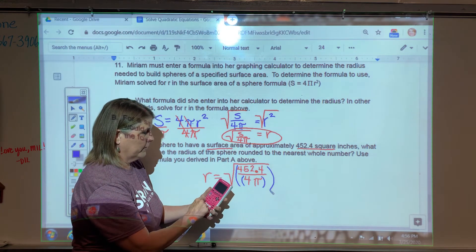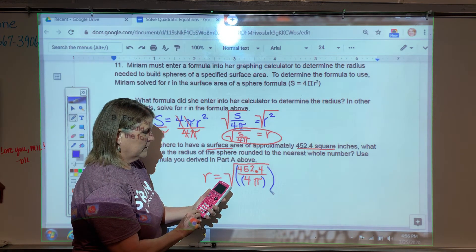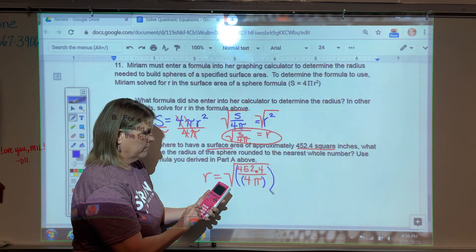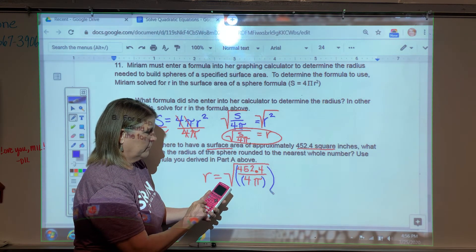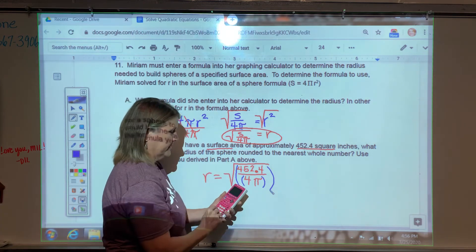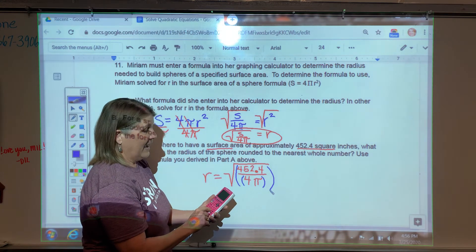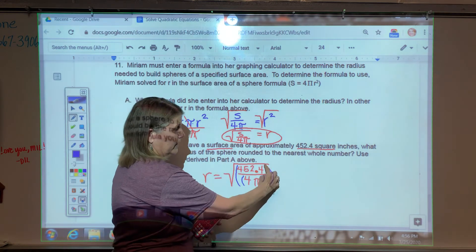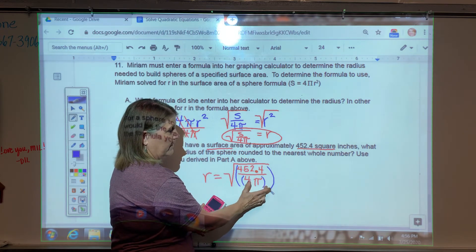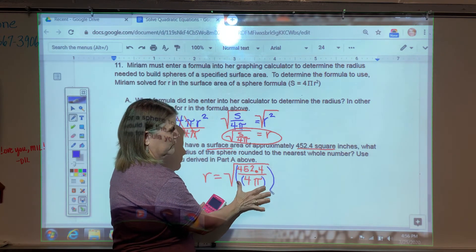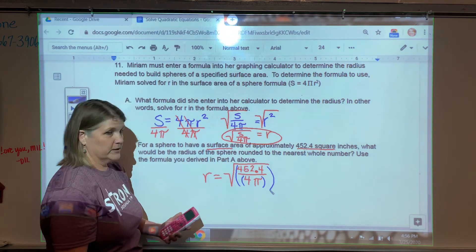I'm going to hit 2nd X squared to pull up that radical symbol. And I'm going to type 452.4 divided by, and everybody needs to open a set of parentheses to type in your 4 pi. Close parentheses. I'm going to need to close, I'm going to have to have two parentheses side by side. I'm going to close this guy, and this one to close this one that was opened for me. I press enter. Mine says 6.0000.